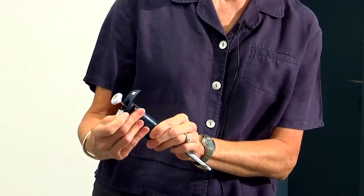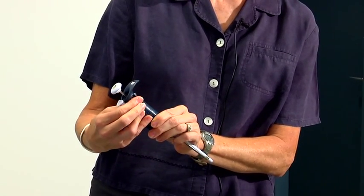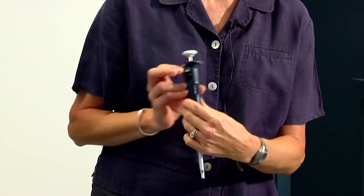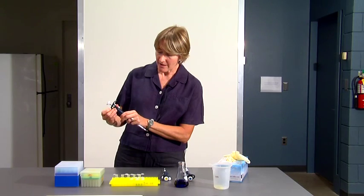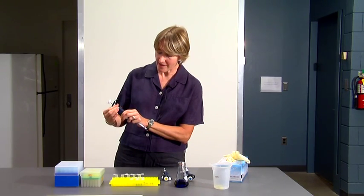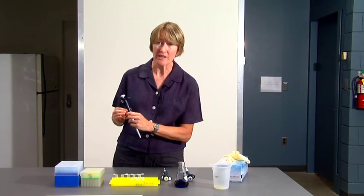To set the pipet, you turn the barrel until the numbers appear in the window for the volume that you want. So I'm going to set this at 100 microliters, or 100.